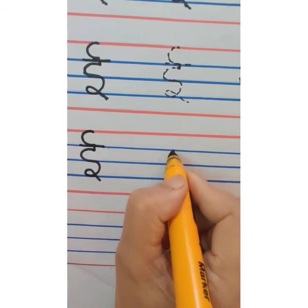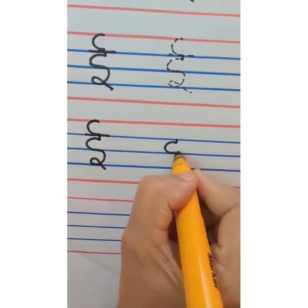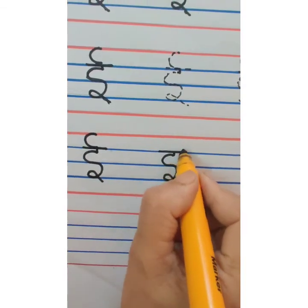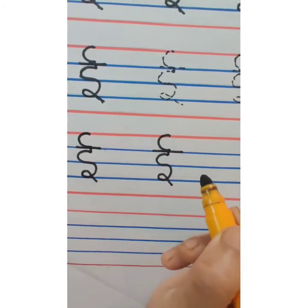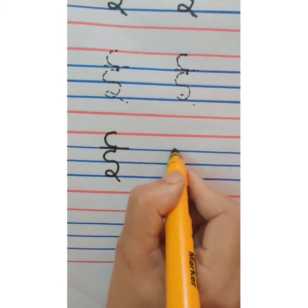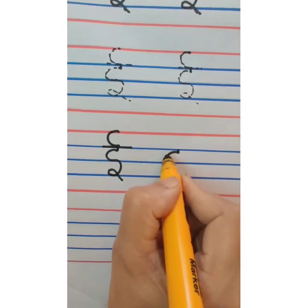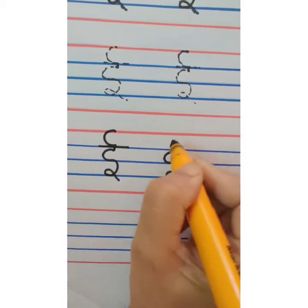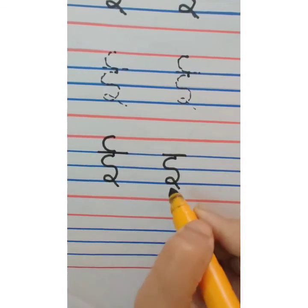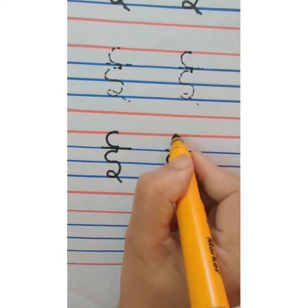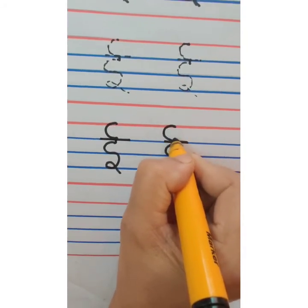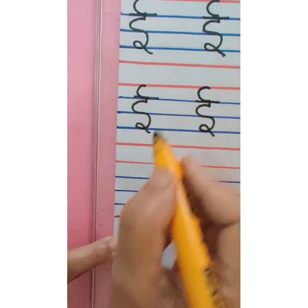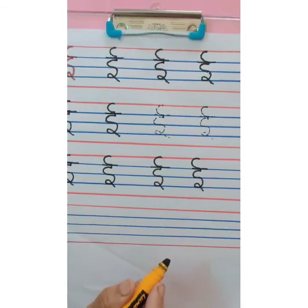This is badi e. Small standing line, c, and ulta c. This is s. Make a loop. Overhead sleeping line, and then c. Badi e. Small standing line, c, ulta c. This is s. Make a loop. Sleeping line overhead. This is chhoti e. And on chhoti e you are going to write like this, c. So this becomes badi e. This way you are going to complete the page.